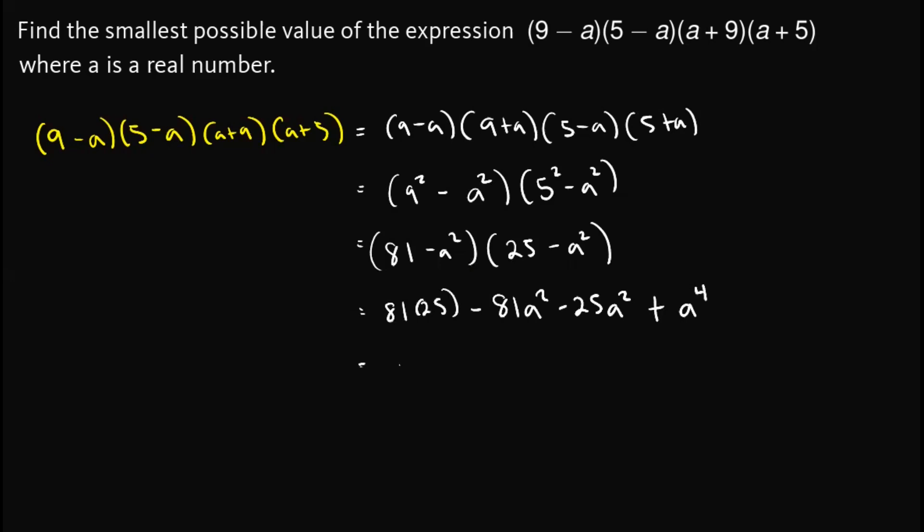Simplifying this, we will have a raised to 4, then the inner terms out here that could give us minus 106a squared. And then simplifying this, 81 times 25 is 2,025.